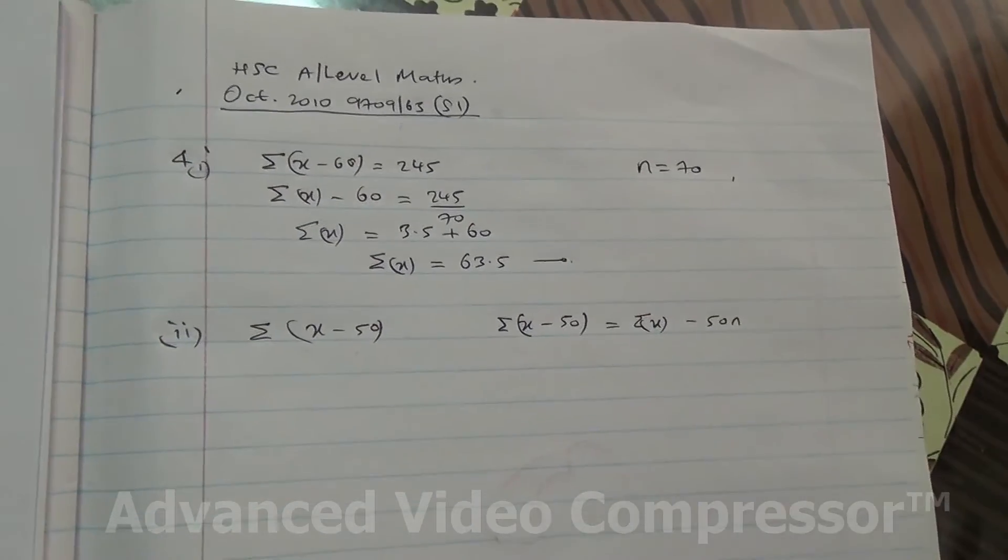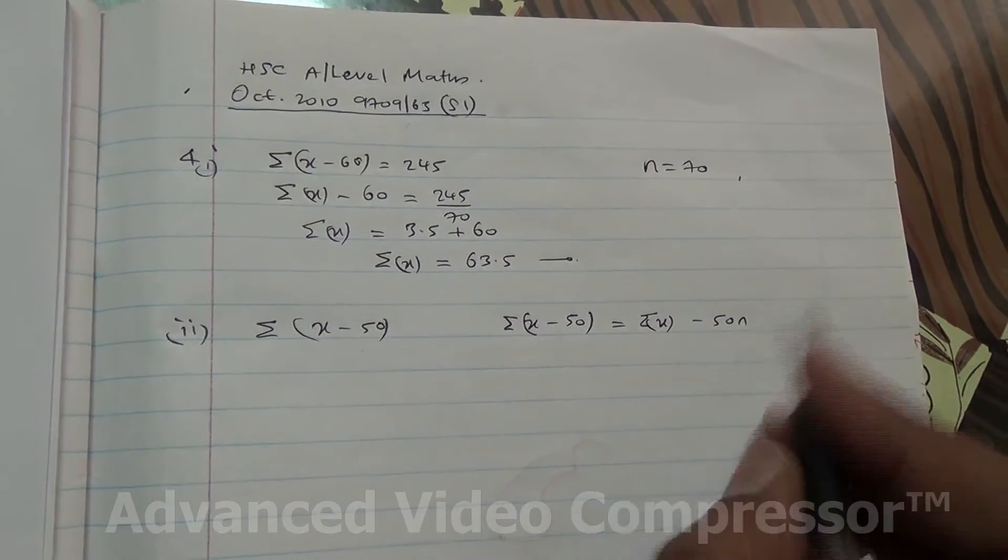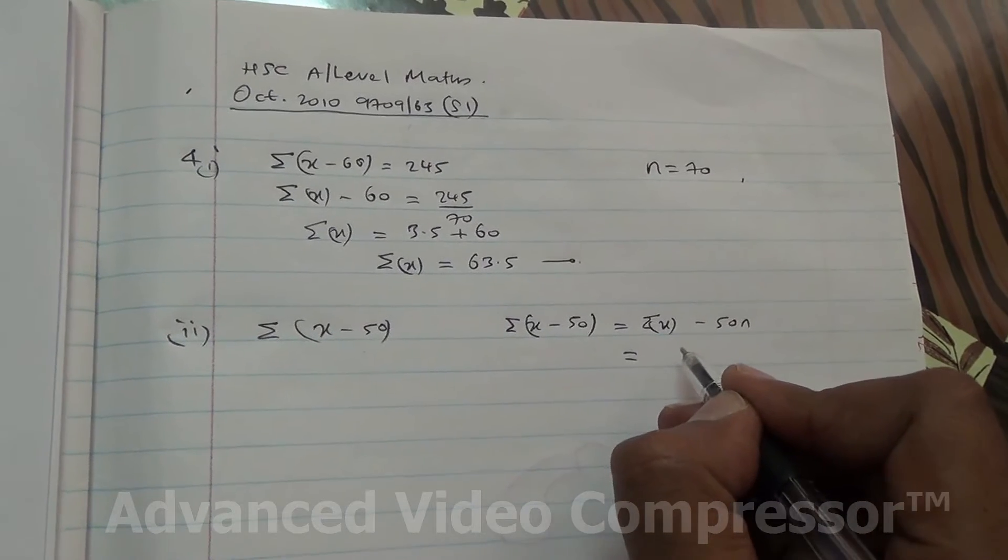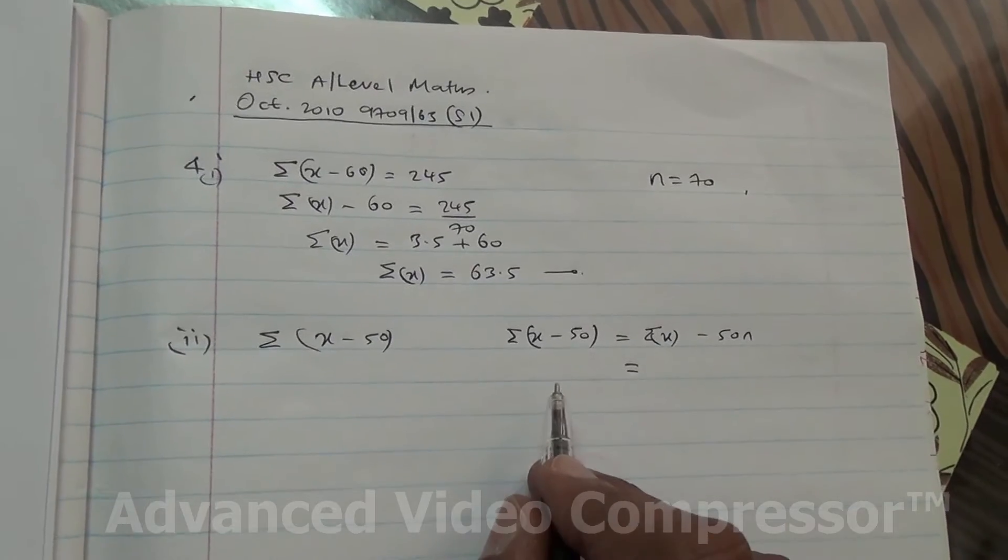Because if you're taking 50 out, it's 50 times n, where n is the sample size. So, therefore, what do we have?